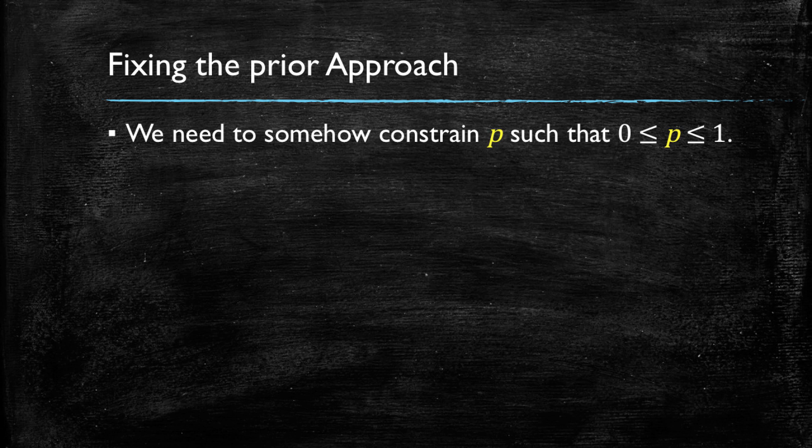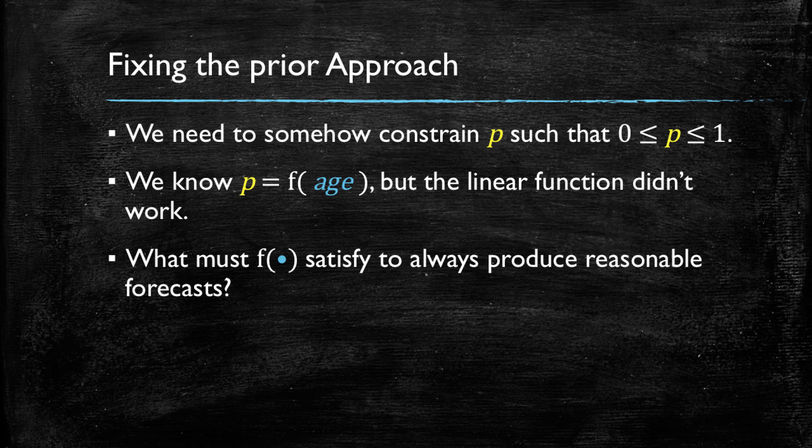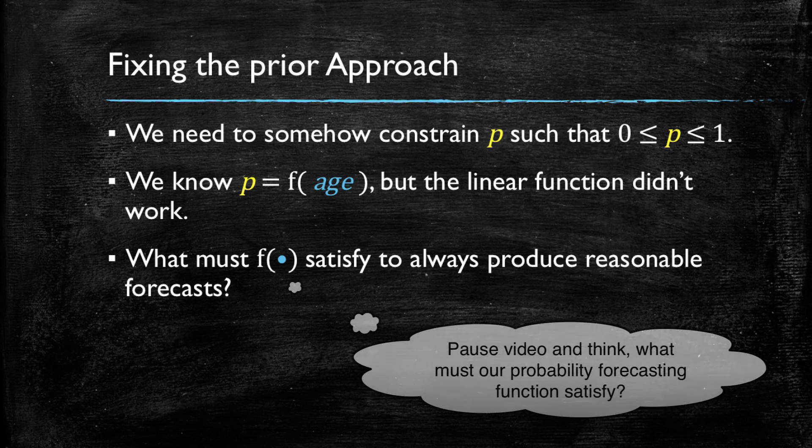Once again, note that probabilities should be between 0 and 1. And we know that the probability will be a function of age, however the linear function did not work for us. So, what conditions should this function satisfy to always produce reasonable forecasts for the probability? I will give you a few seconds to think about this.